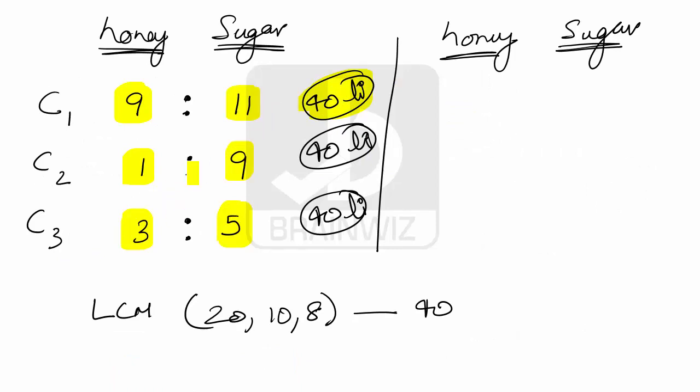Now here, these 40 liters is 9 parts and 11 parts. So we can break this 40 liters into 2 parts. Now we can say here 20 parts are 40 liters, 1 part is 2 liters. So 9 parts means 18 liters and 11 parts is 22 liters.